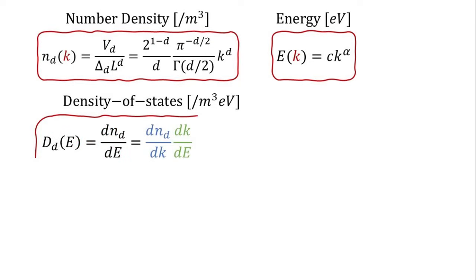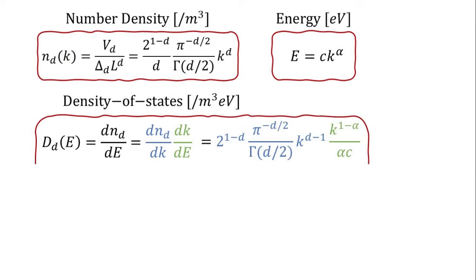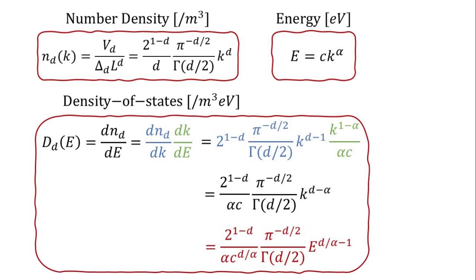By applying the chain rule, we can express the derivative of the number density with respect to energy as a product of derivatives in k. Both the derivatives of number density and energy with respect to k are straightforward to derive. We provide this intermediate result here for your reference if you wish to inspect the details. The general expression for the density of states can then be obtained, as shown here. We observe that the density of states depends on the dimensionality d, as well as the parameters alpha and c in the energy dispersion.